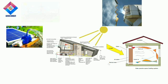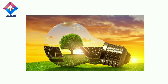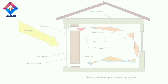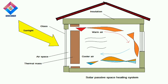The solar passive space heating system maintains the temperature inside the room with the help of solar energy. Now let's discuss the concept of this system and how it works. First, we discuss the different parts of this system. The basic main components are: first, the solar house; second, the Trombe wall; and third, sheets of glass.